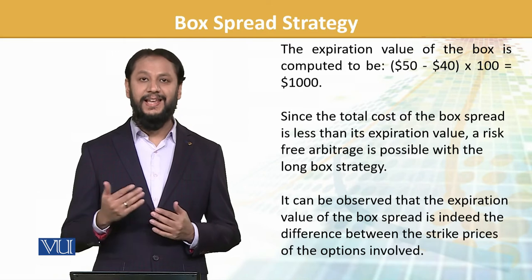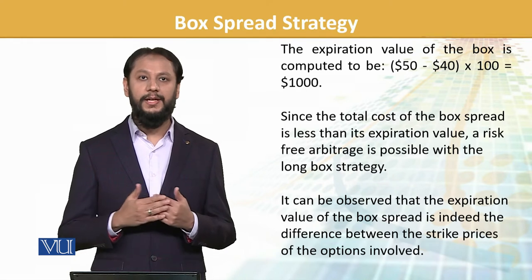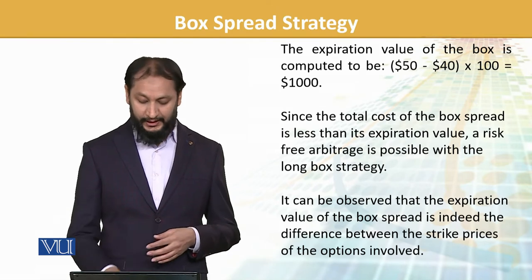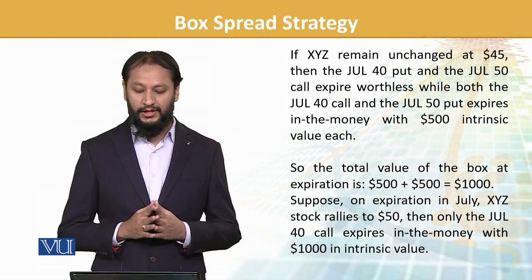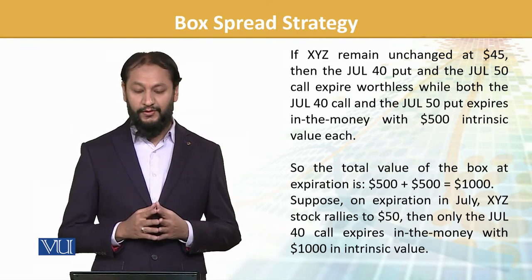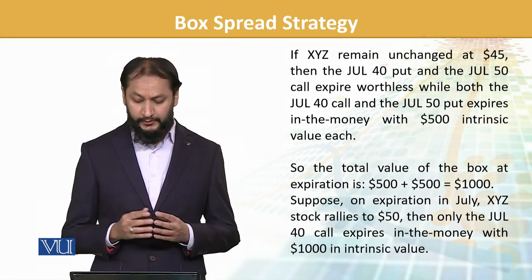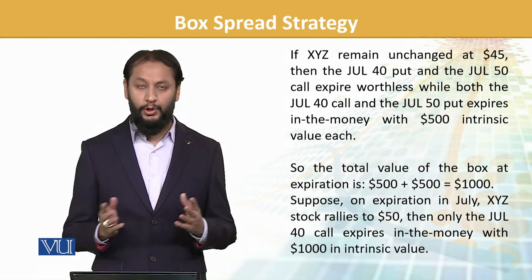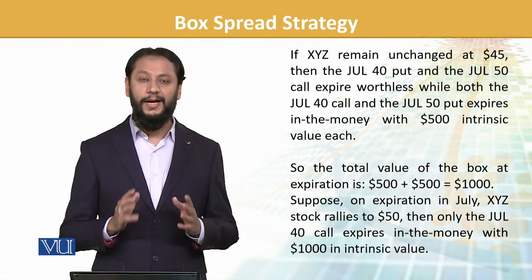Since the total cost of the spread ($950) is less than the expiration value ($1000), risk-free arbitrage is possible. अगर यह same होता — $950 होता — तो arbitrage opportunity नहीं होती. If the stock stays unchanged at $45, the July 40 put and July 50 call will become worthless, and the intrinsic value will be $500 — so total value is still $1000.